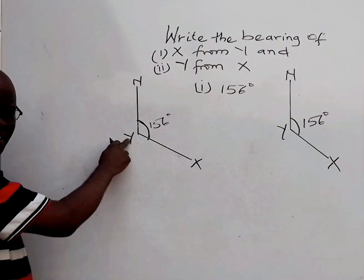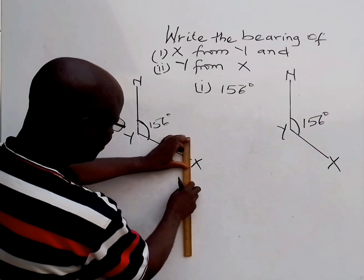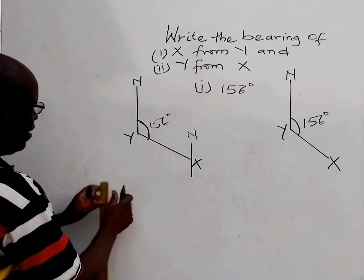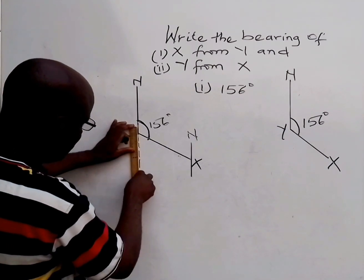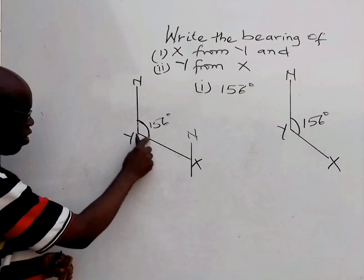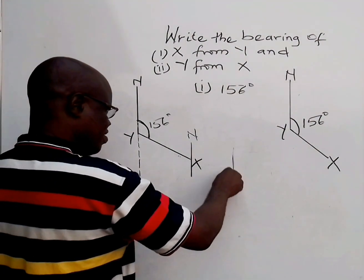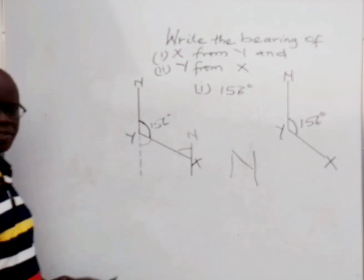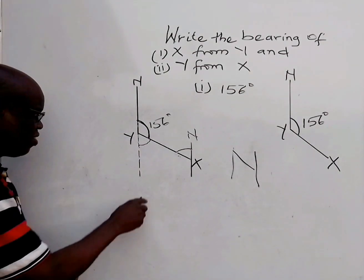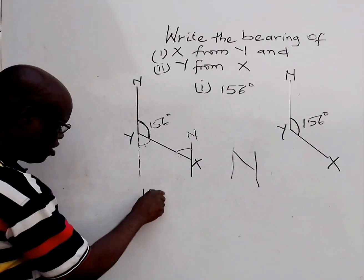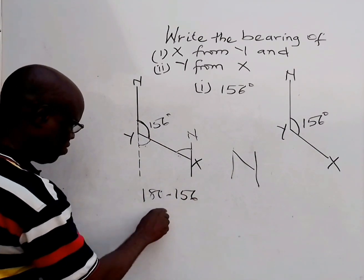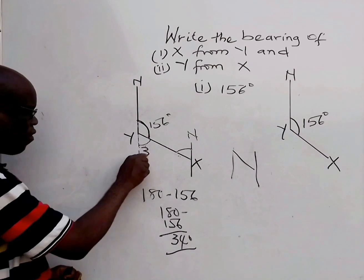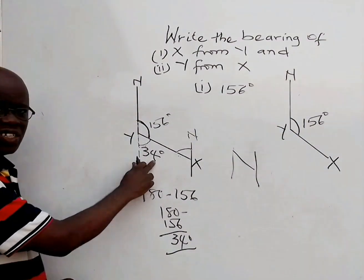Now, what is the bearing of Y from X? In this case, you draw your cardinal to signify north, then extend this line. By extending this place, you discover that you have a Z angle. So this angle is the same thing as this angle. You know that from here to this place is 180 — angle on a straight line. So this angle will be 180 minus 156, which is 34 degrees. According to the alternate angle rule, this angle is also 34 degrees.